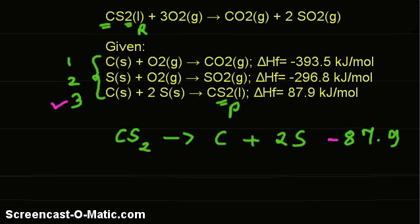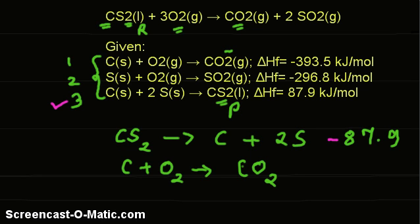Now let us look at carbon dioxide. Carbon dioxide is on the product side in equation 1, which matches what we need — no need to reverse the direction. So we rewrite equation number 1 as it is: carbon plus oxygen gives carbon dioxide, with enthalpy ΔH = −393.5.